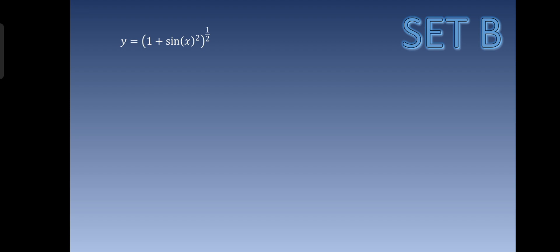Our given is y is equal to 1 plus sine x raised to 2, all raised to one half. For this given, the first step is to take the derivative, which is y prime is equal to d over dx of 1 plus sine x raised to 2, all raised to one half, using the differentiation rules.